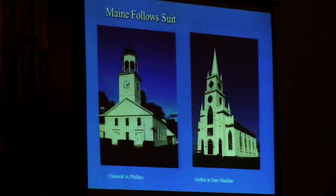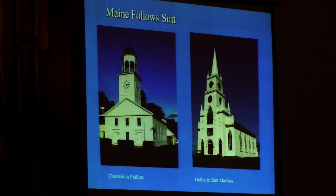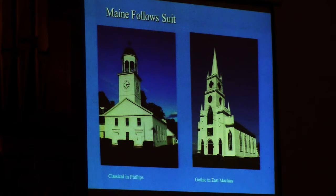And in Maine, we do the same thing, also in the early part of the 19th century. This is in Phillips, up above Farmington — a sort of classic meeting house with two doors and a square tower over the top, like your church here. And then this is a Gothic church in East Machias by a Canadian architect who has come over the border to bring this new Gothicism into Maine. He's complicated the door situation by providing three doors, so that you can either have the bishop's door in the middle, or have men and women on the sides, or just have it be a free-for-all. But it's Gothic.